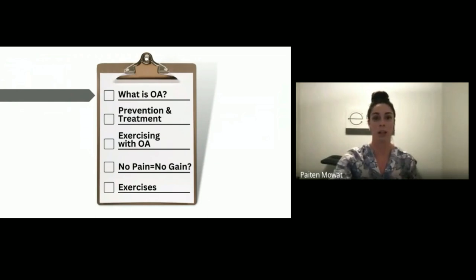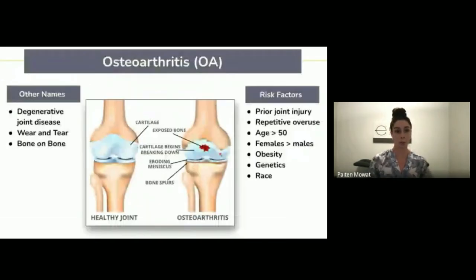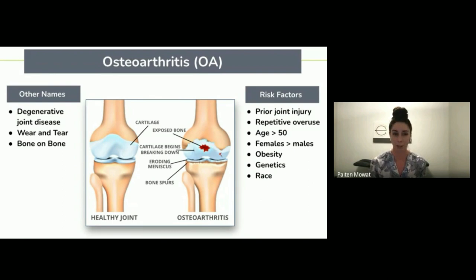What is OA and who does it affect? Osteoarthritis, or OA — what exactly is it? It can go by many names: degenerative joint disease, wear and tear arthritis, or my least favorite term, bone on bone.